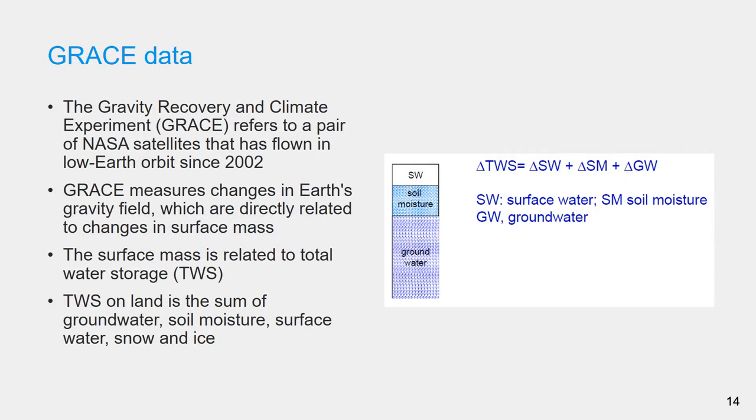Since remote sensing data for most of the main components of a water balance equation are available, we can compute the water balance of a river basin using remote sensing data. The remote sensing data we need for water balance computation are maps of precipitation, evapotranspiration, and change of storage. Precipitation and evapotranspiration data can be obtained from various remote sensing products, including VAPO.